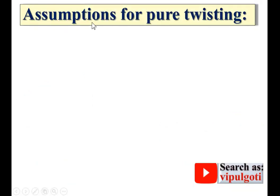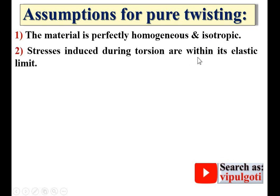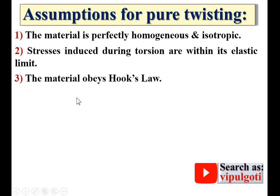Now the assumptions for pure twisting. First, the material is perfectly homogeneous and isotropic — homogeneous means at each and every point the material has the same chemical composition and same properties; isotropic means the material has the same properties in all directions. Second, the stresses induced during torsion are within the elastic limit. Third, the material obeys Hooke's Law.